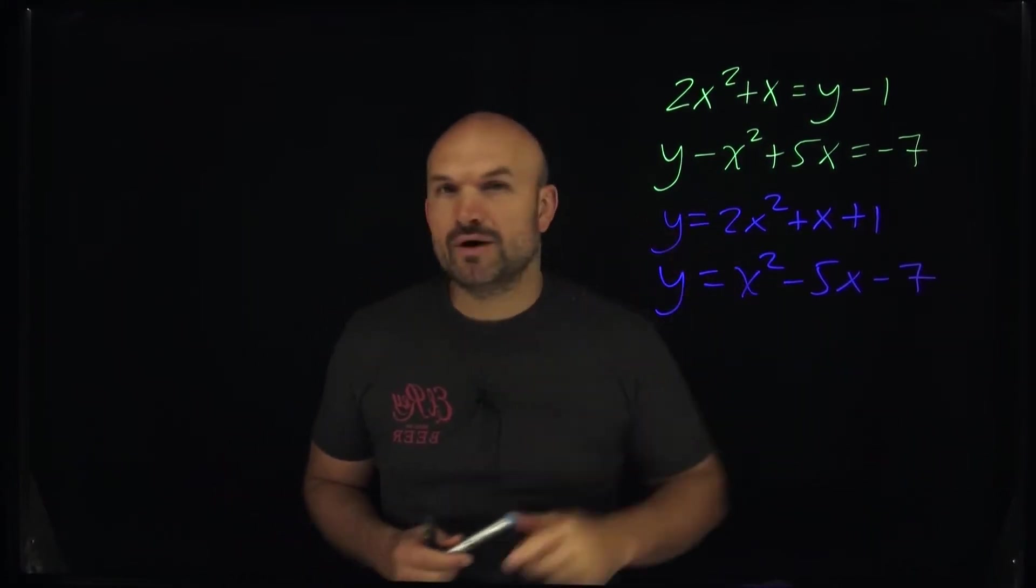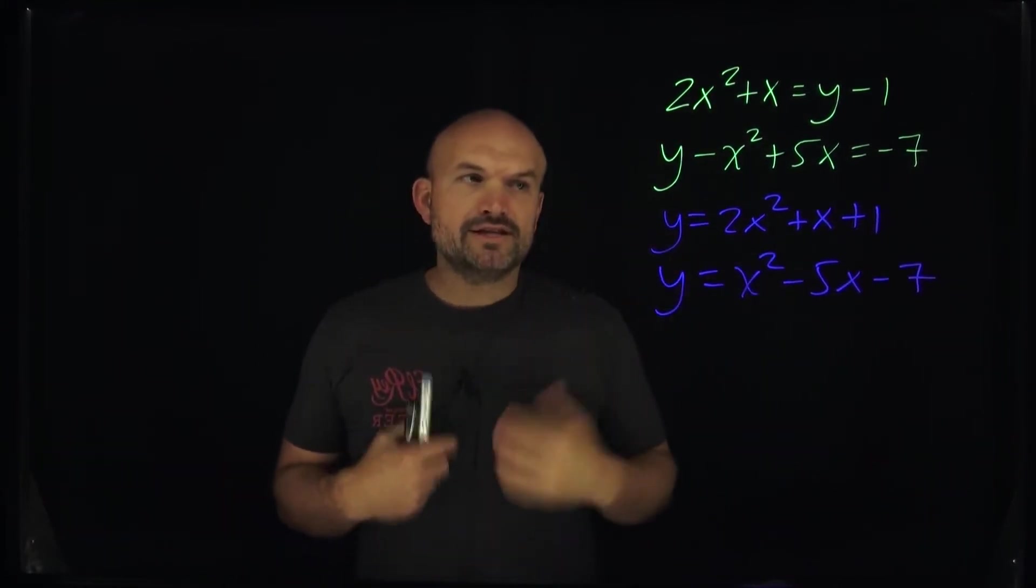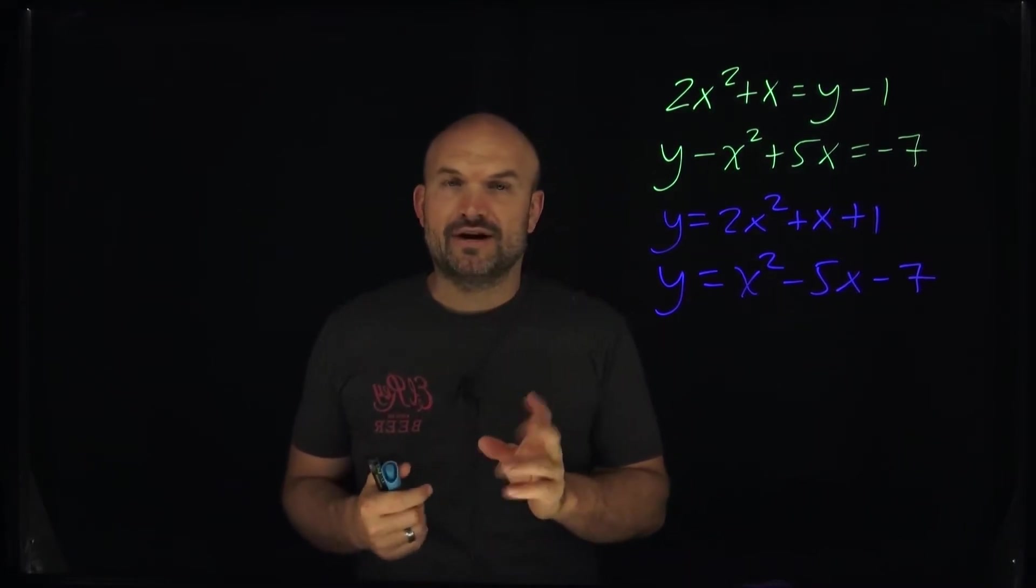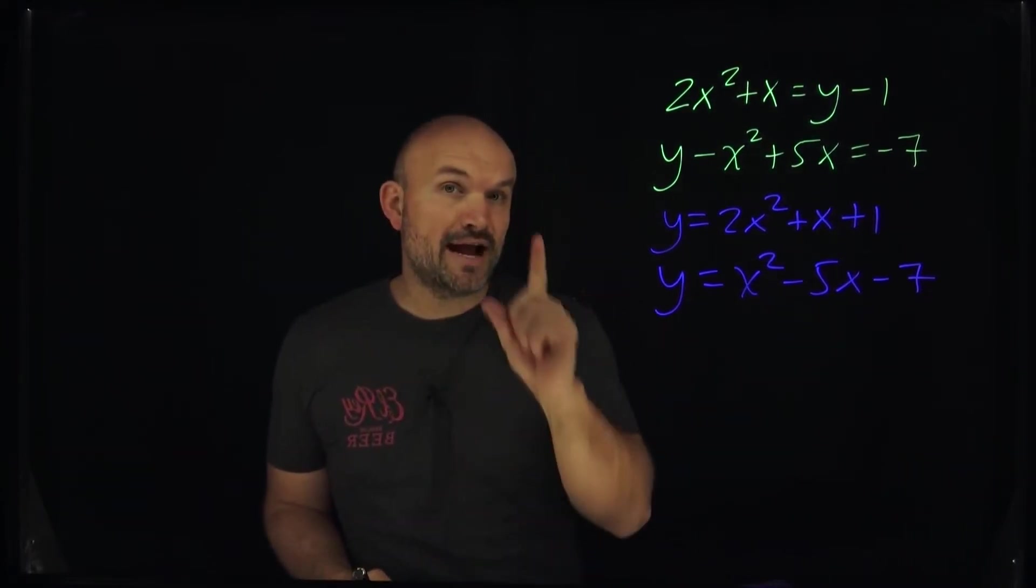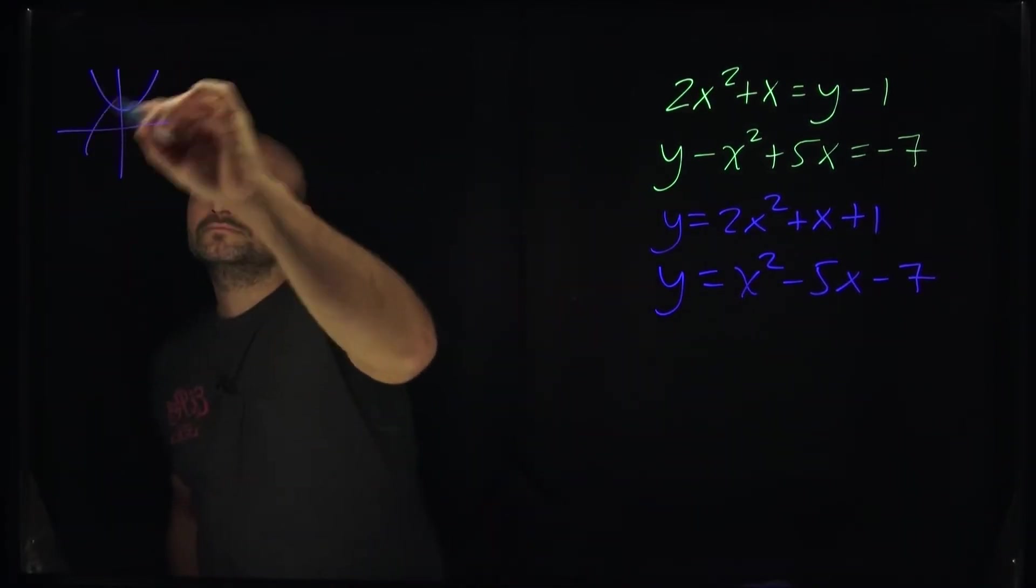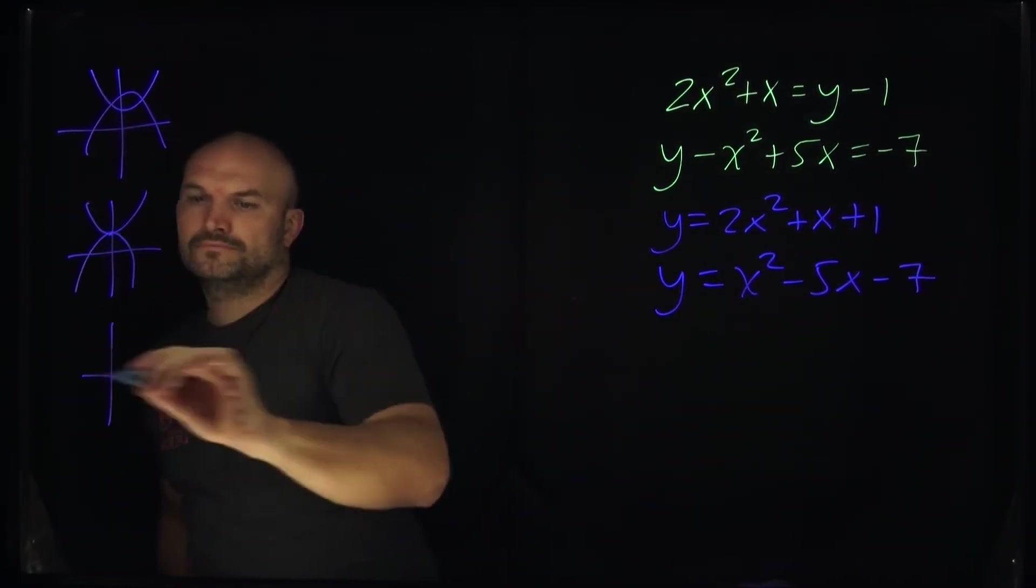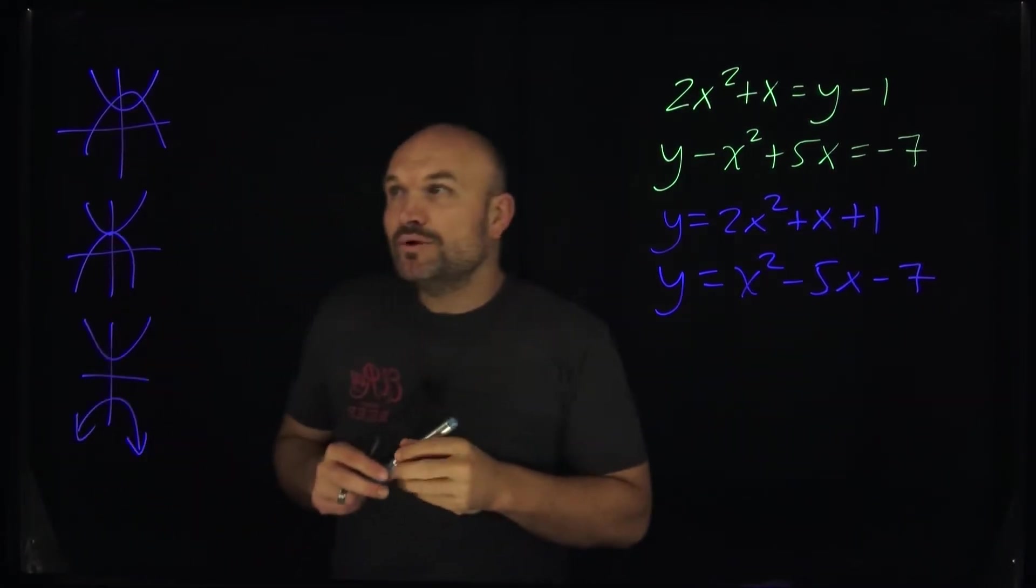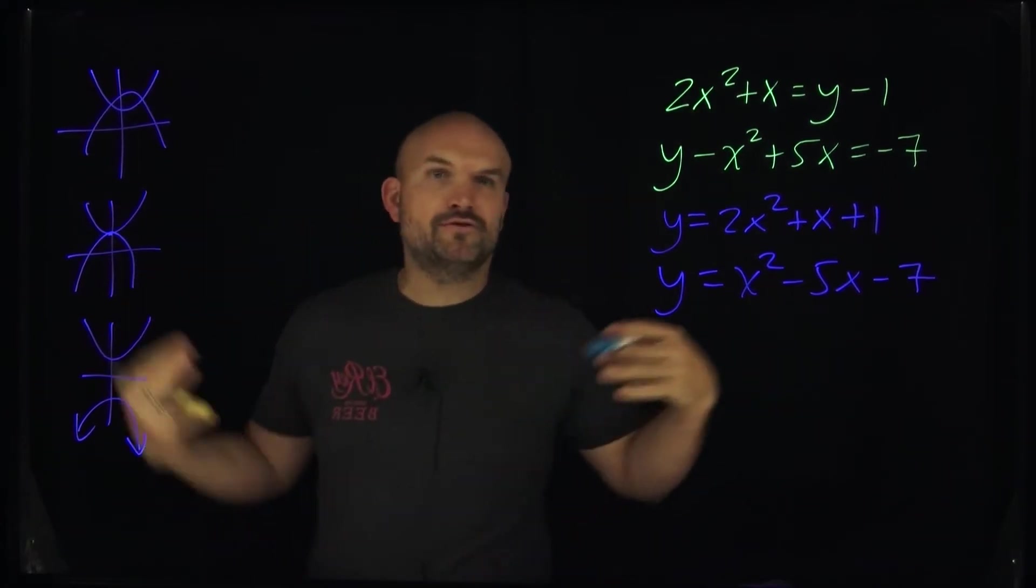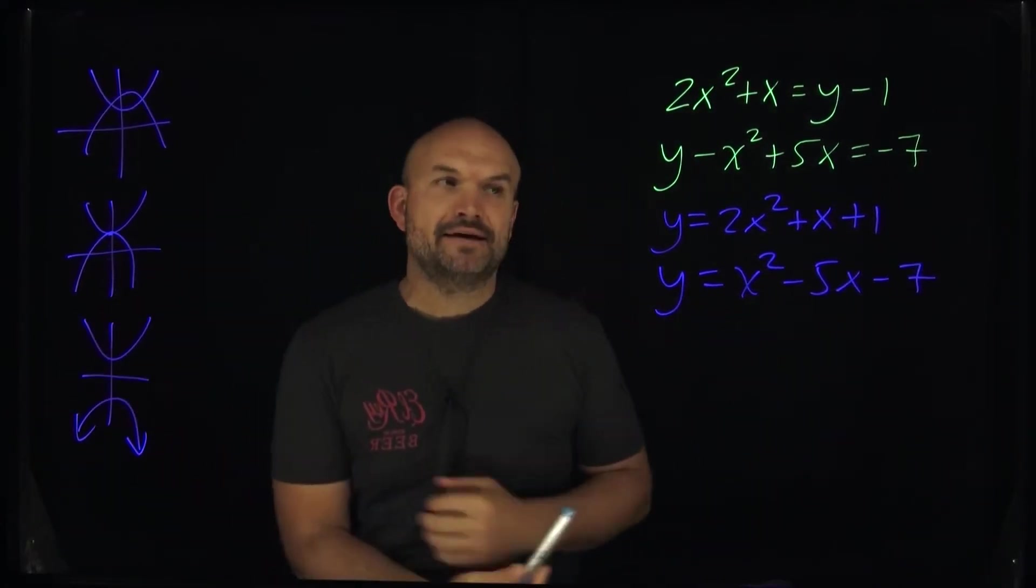So now what I have is I have two quadratic equations. Now how could these quadratic equations intersect each other? There's a couple different options. They can intersect each other at two points, they can intersect each other at one point, or they could not intersect each other at all. So I don't really know. The only thing I do know is I'm gonna either have two, one, or no solutions. We're not looking for three answers or anything crazy like that.